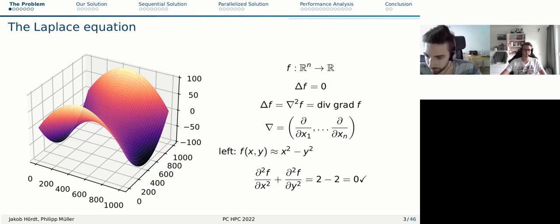The Laplace equation is this equation, the Laplace operator of a function is zero. A function in this case is a multidimensional function, so it maps multiple variables to one real number. The Laplace operator is equivalent to the divergence of the gradient of f. On the left side here, I have an example of a function f that satisfies the Laplace equation, which is x squared minus y squared. And this creates the saddle function here.